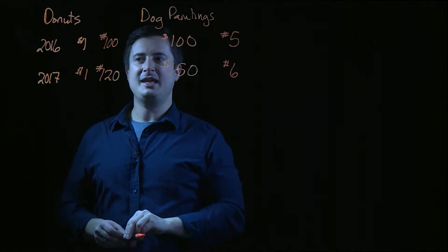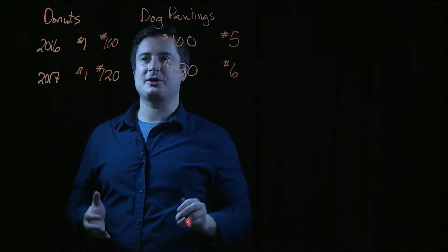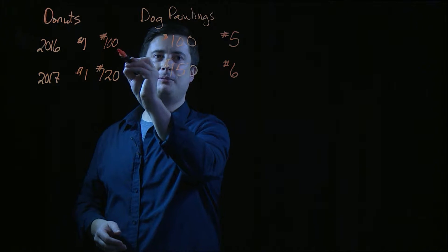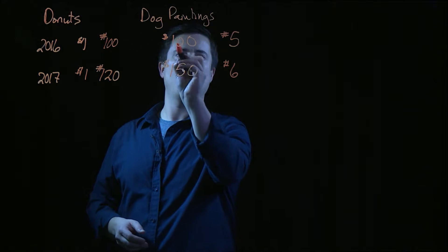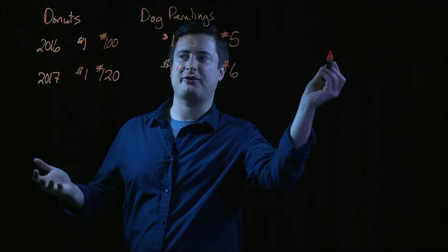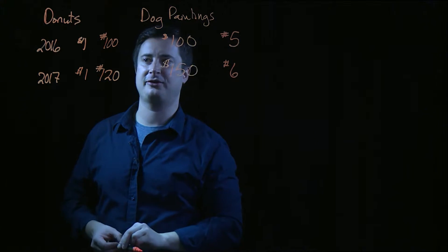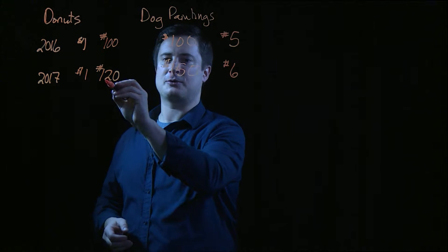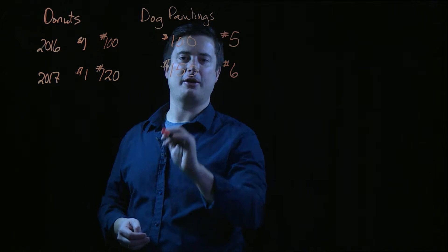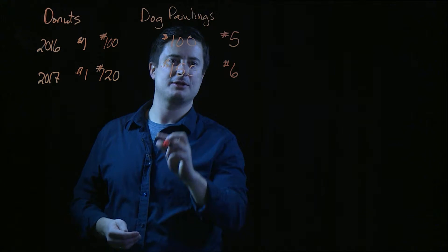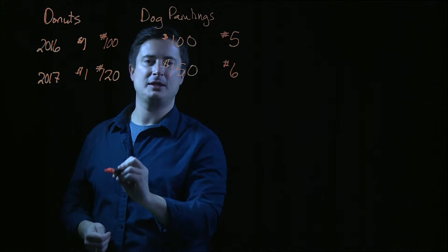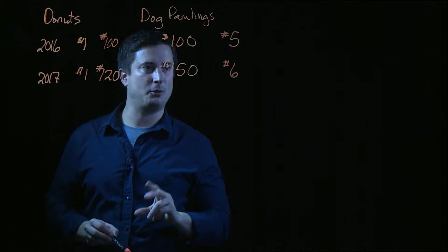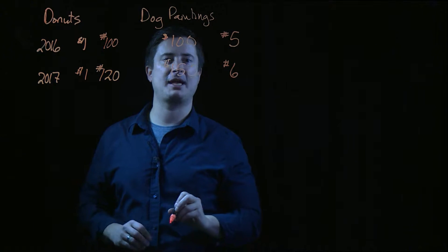Given this, our simple GDP calculation would be one times one hundred, plus one hundred times five, or six hundred in 2016. For 2017: one times one twenty, plus six times one hundred and fifty — so this would be nine hundred and twenty, so one thousand and twenty. That would be GDP in a simple world, but let's complicate this a little more.